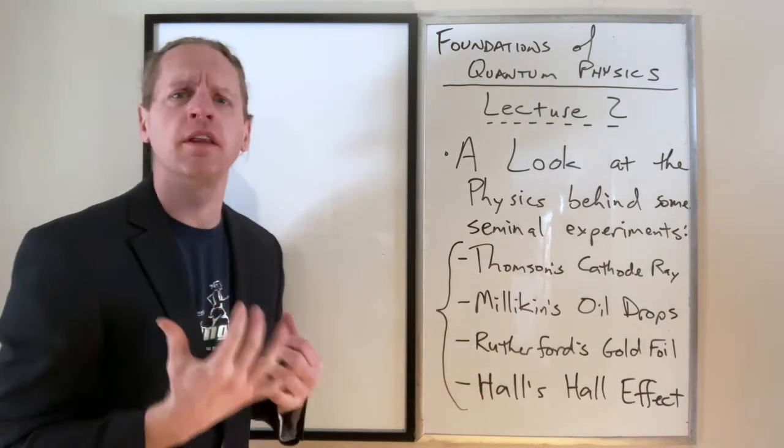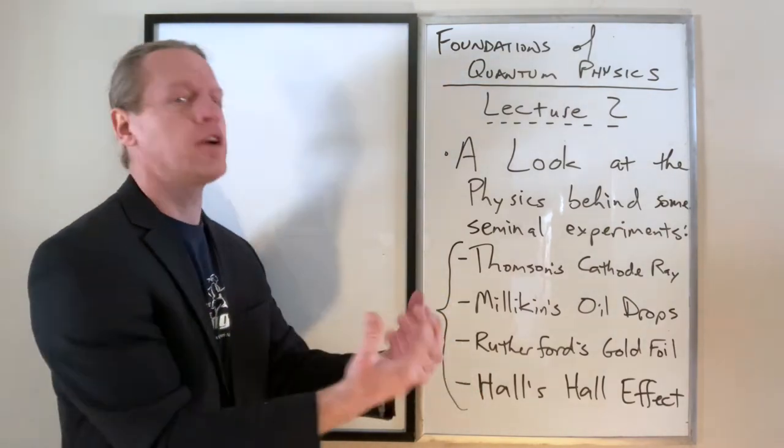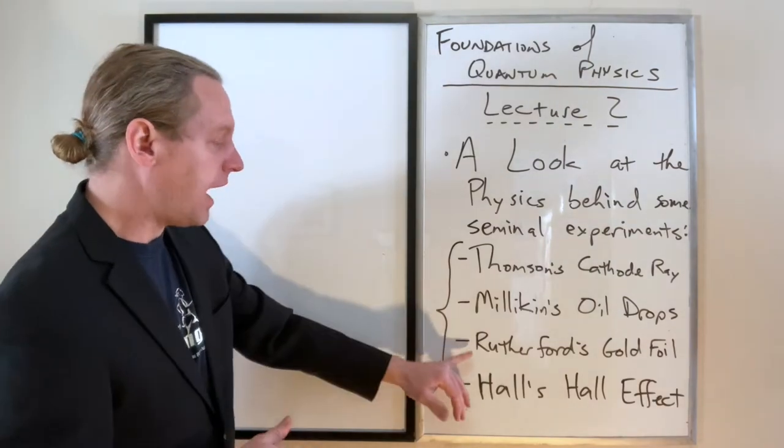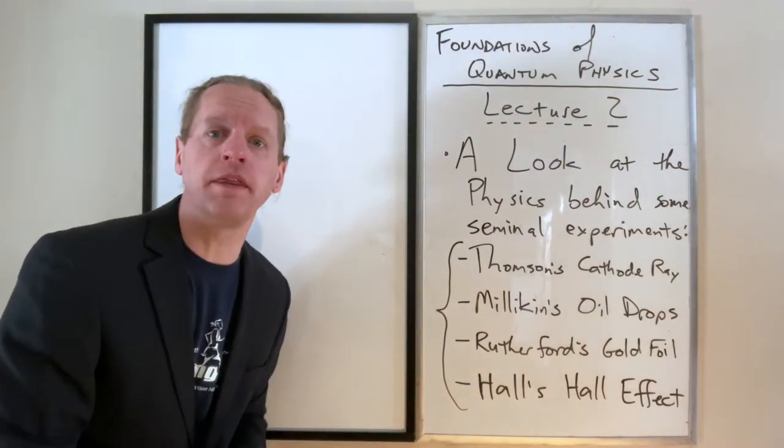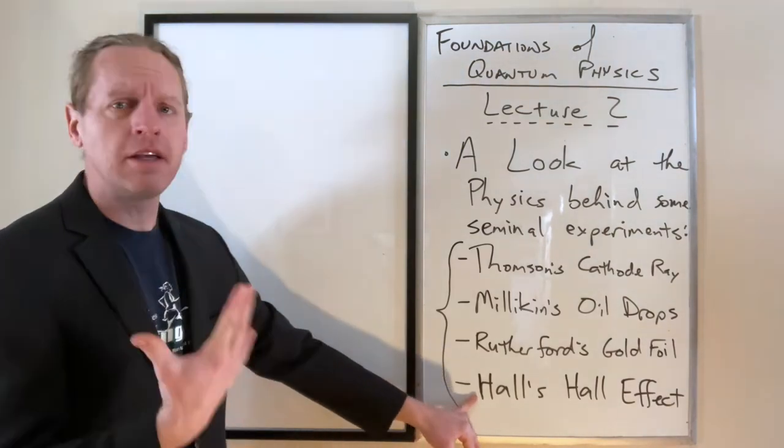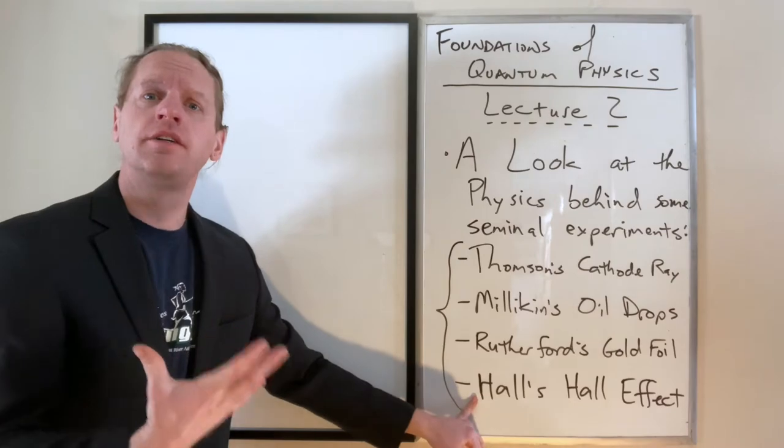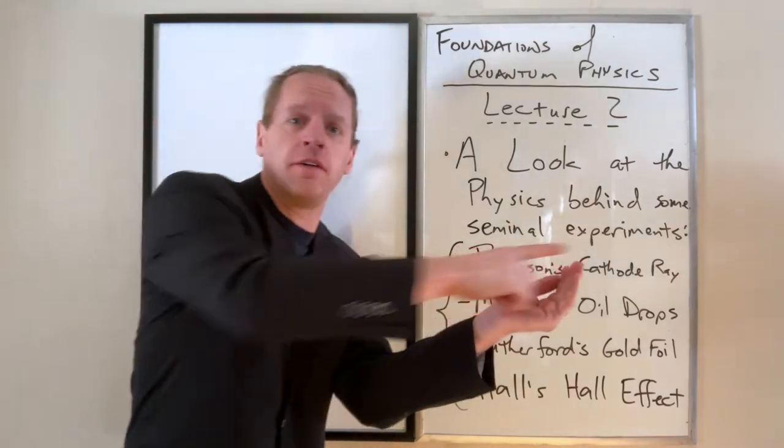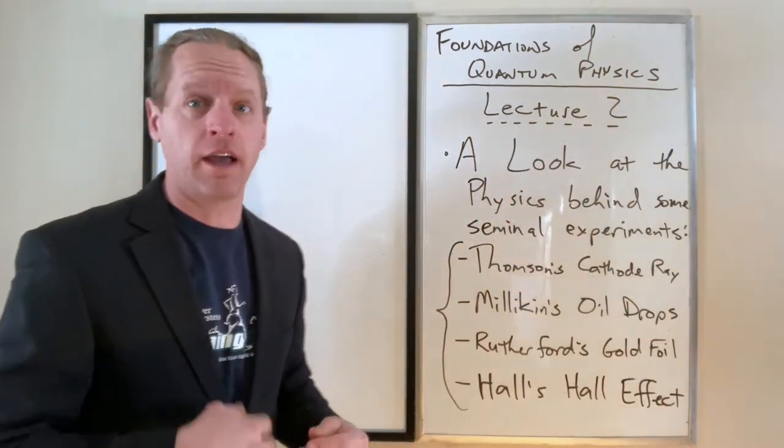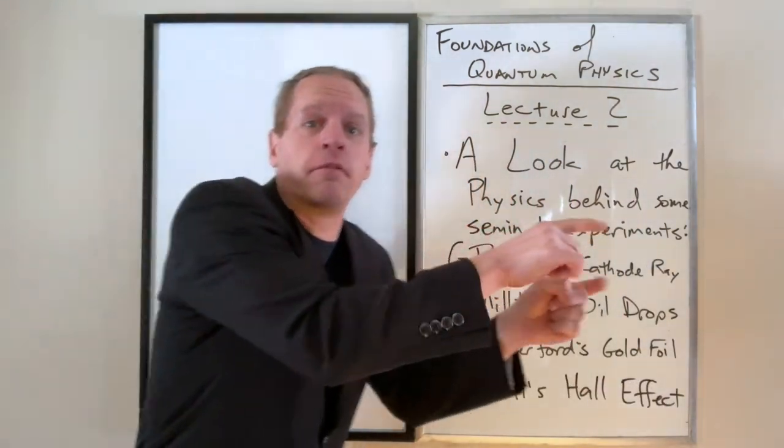And then we're going to talk about at least the predictions from Rutherford's gold foil experiment, and how the results were so astoundingly different than the predictions. And then, finally, this was the one experiment that I really should have mentioned last time. But Hall is credited with, essentially, discovering that it's not positive charges creating current through a wire. It's, in fact, negative charges running the opposite direction that creates what we see as that type of current.